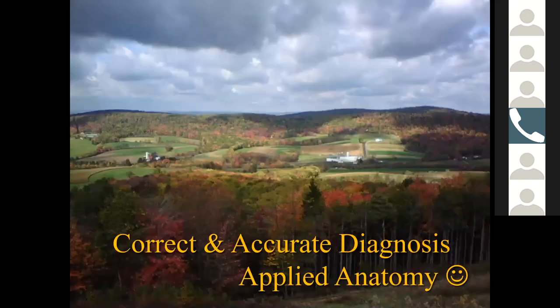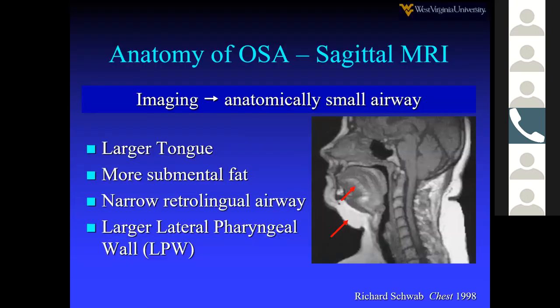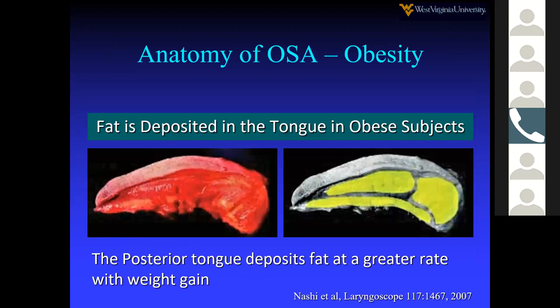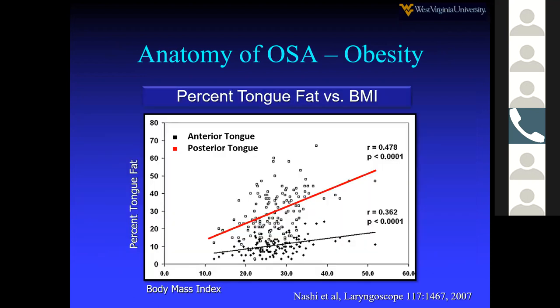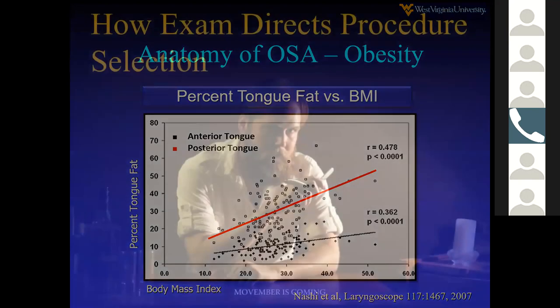Tongue-based or base-of-tongue obstruction is extremely common in morbidly obese patients, those with deficient mandibles, or very severe OSA. The tongue is large and the retropalatal airway is narrow. Fat is deposited in the tongue in three separate zones, with the posterior zone enlarging with weight gain at a faster rate than the rest of the tongue. Tongue base obstruction increases with BMI.